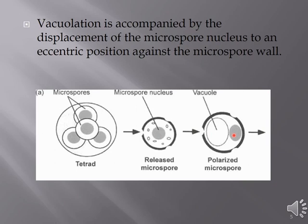By displacement against the microspore wall, you can observe that this nucleus has been displaced from its original position. This displacement occurs because a large vacuole has occupied the central position, and this is the first step in the maturation of the pollen.